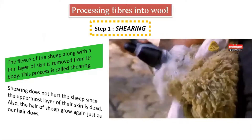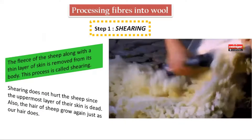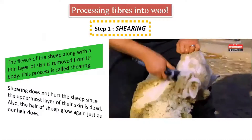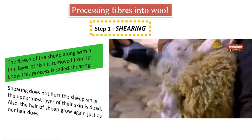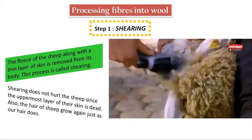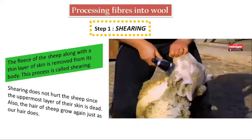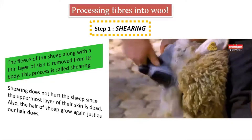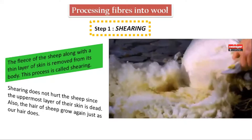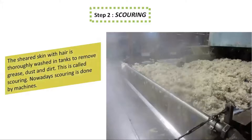After shearing, the removed fleece needs to be cleaned thoroughly. The second step is called scouring — the cleaning process where the sheared skin along with the hair is thoroughly washed in large tanks using detergent and hot water to remove all impurities and contaminants such as vegetable matter, sand particles, grease, oil, and many more.